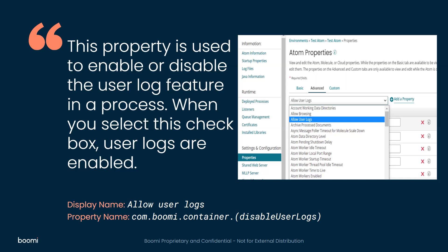The display name of the property is Allow User Logs and the underlying property name is com.boomi.container.disableuserlogs. To add this property, go to Properties, then the Advanced tab. Here you can see the Add a Property button, and from here you can add this Allow User Logs property.